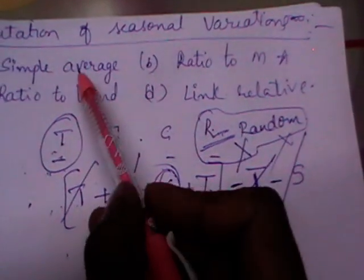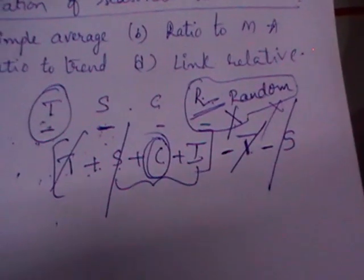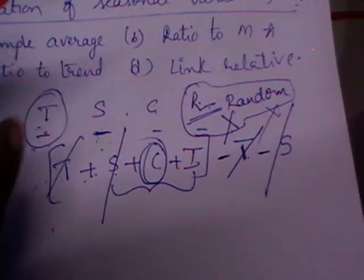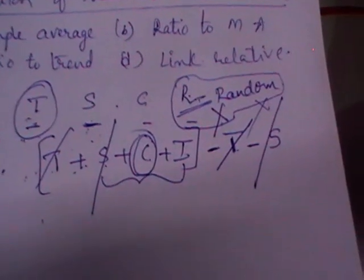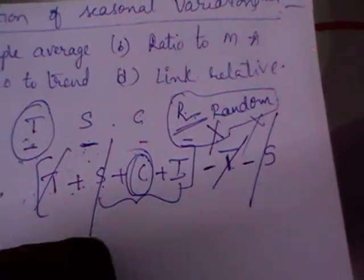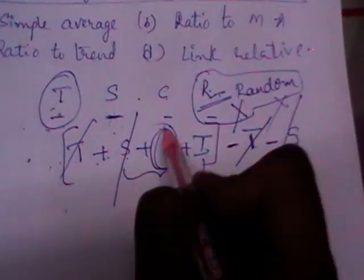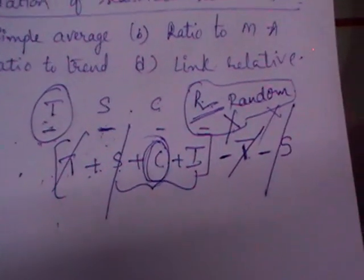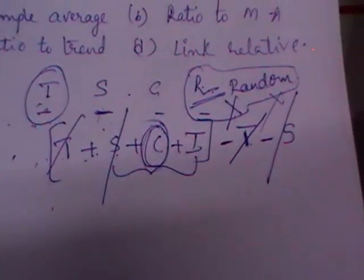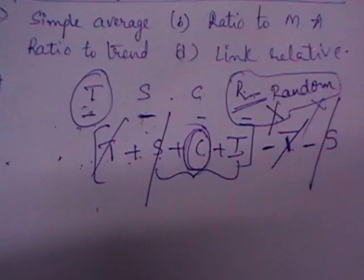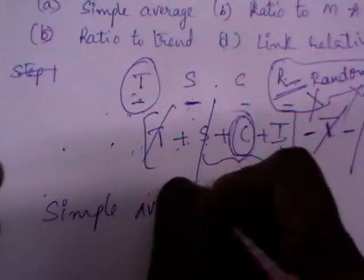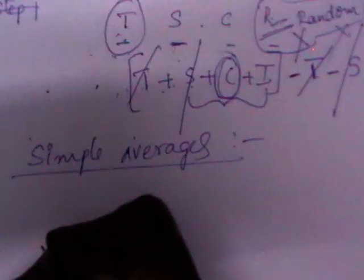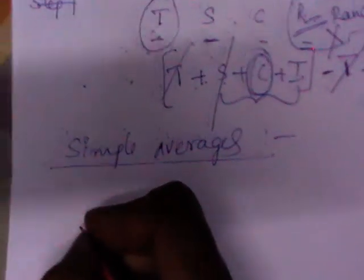By studying and removing trend, we are left with only three factors. Similarly, by measuring the seasonal variations, we can know the effect of different seasons on the phenomena, and by eliminating them, we can isolate only cyclic variations in the data. Let us now discuss the first method, which is the simple averages method. As already noted, all these methods involve step-by-step procedures.